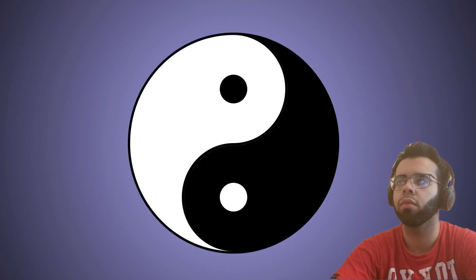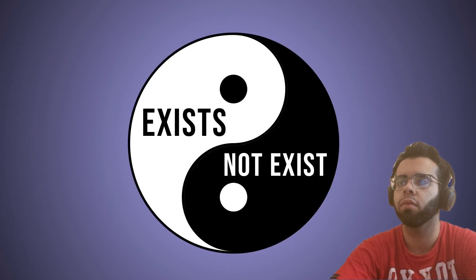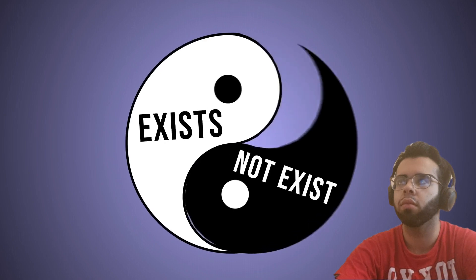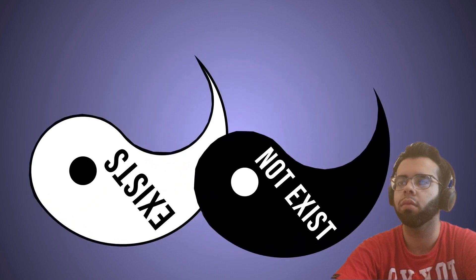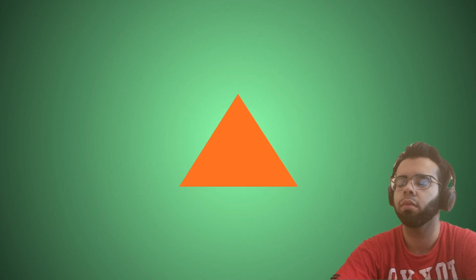This is like saying that something both exists and does not exist at the same time, which is obviously an absurd proposition. A good example to help demonstrate this principle is a triangle.